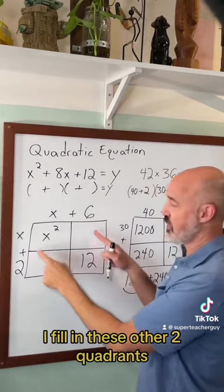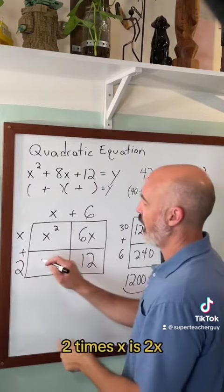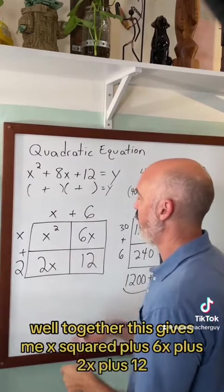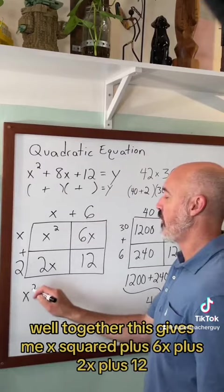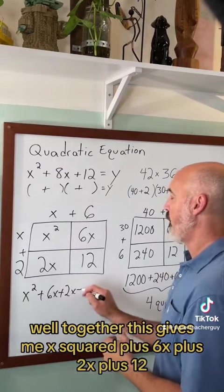I fill in these other two quadrants. 6 times x is 6x. 2 times x is 2x. Well together this gives me x squared plus 6x plus 2x plus 12.